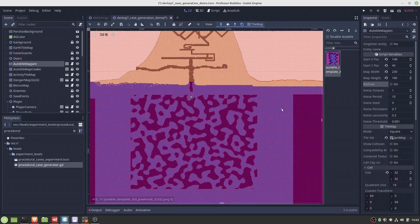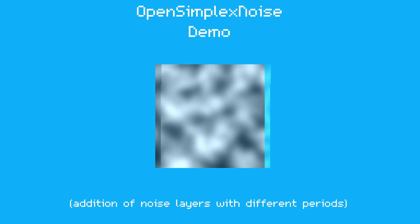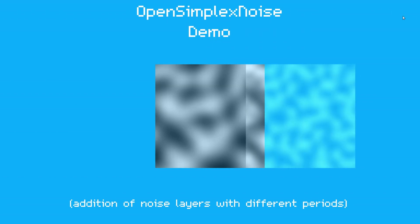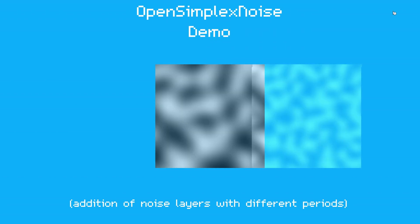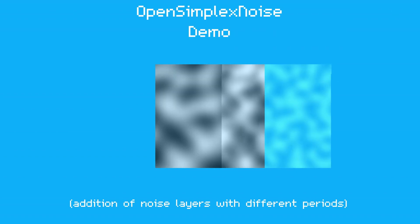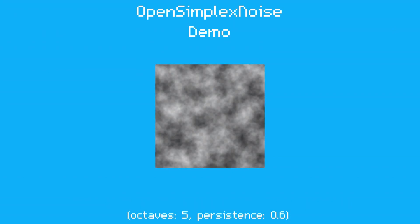Step number three: while simple low period noise could be enough to generate random caves, in some cases you would like to increase the randomness a bit. This is where octaves come into play. The octaves simply mean that instead of one random image, we generate several random images with different noise periods and sum them up together. By giving less weight to the lower period noise images, we can fine-tune the heavy fluctuation, which might lead to something interesting like this image resembling a cloud texture.